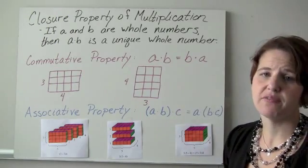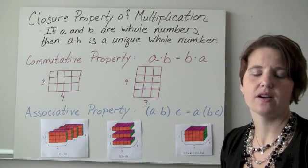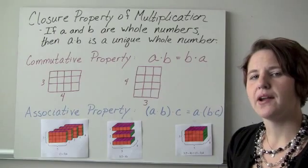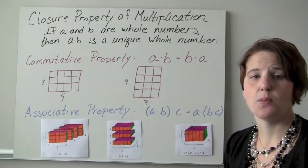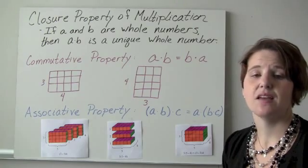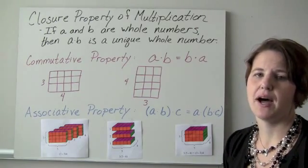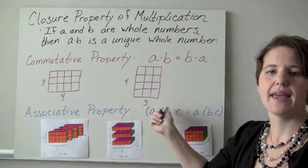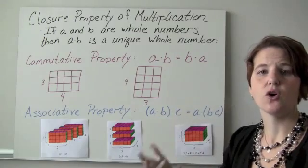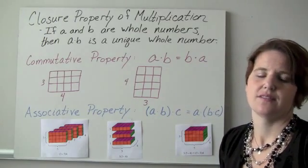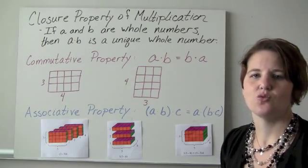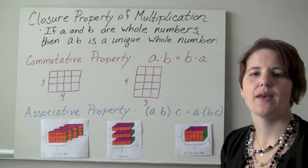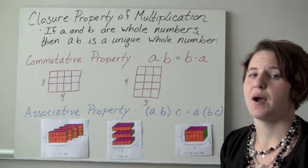We have the commutative property, which means we can multiply in any order: A times B is the same as B times A. One model that can be used to show this is the area model. On the left I have a 3 by 4 rectangle, and on the right it's a 4 by 3 rectangle. When you count up the squares they have the same area — it's really the same rectangle, just rotated on its side. So we have the commutative property for multiplication.